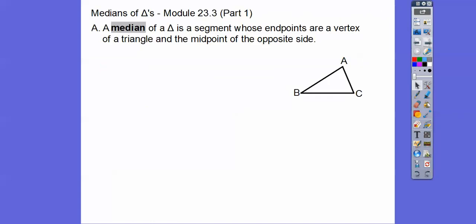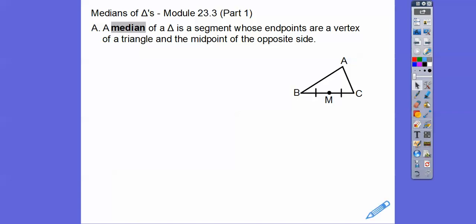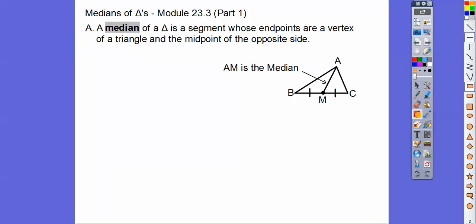So medians of triangles: a median of a triangle is a segment whose endpoints are a vertex of the triangle and the midpoint of the opposite side. So this is a vertex, this is a vertex, this is a vertex. I'm going to focus on this vertex right here, then go to the midpoint of the opposite side. We construct the midpoint right there — that's shown with two dashes — and then we connect them. That gives us our median. AM is a median right there.